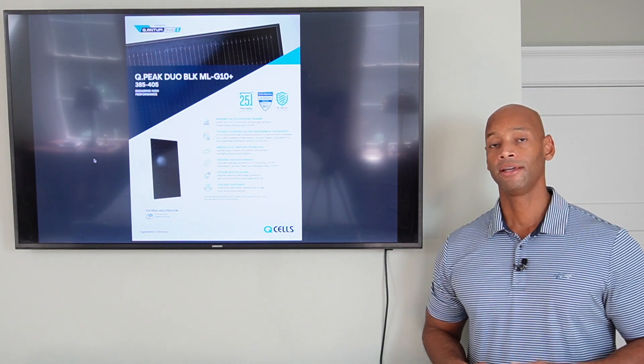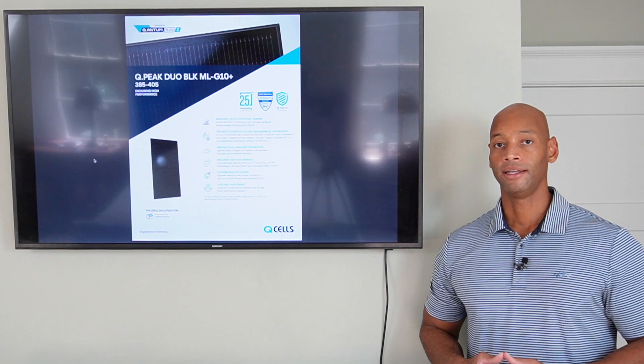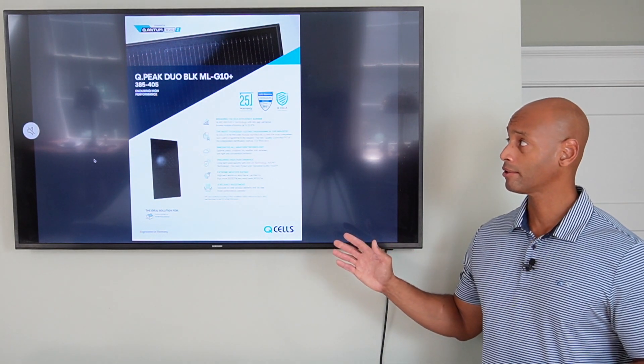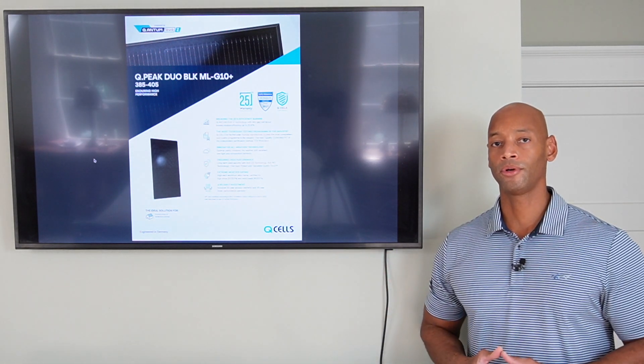Up until this year, the 60-cell module was the most common form factor for a residential solar panel installation. Now, with QCELLS, and with this particular model, this is what we call a duo module.